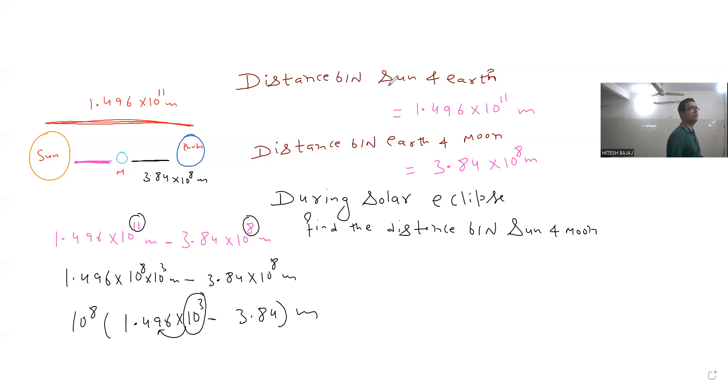Thousand into 1.496 is 1496. This is 3.84. 1496 minus 3.84 equals 1492.16. So if this is the answer, the number of values should be one or equal to one but less than 10.